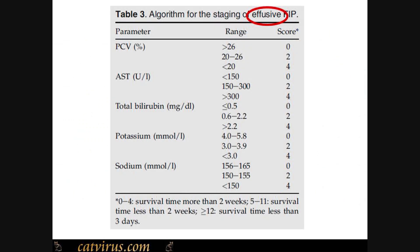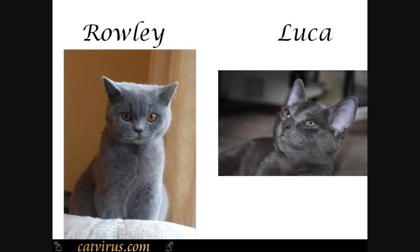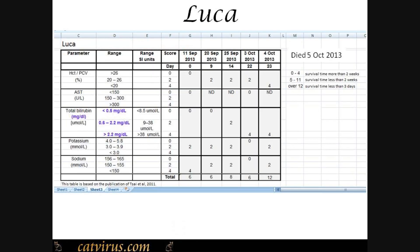The eagle-eyed among you will have noticed that the paper refers to effusive FIP, but I would just like to show you the results of Luca, who unfortunately had non-effusive FIP, and show you his scores, which were 6, 6, 8, 6, and 12. So right from the outset his prognosis was pretty poor, and that in fact proved to be the case. He was lost on the 5th of October 2013.